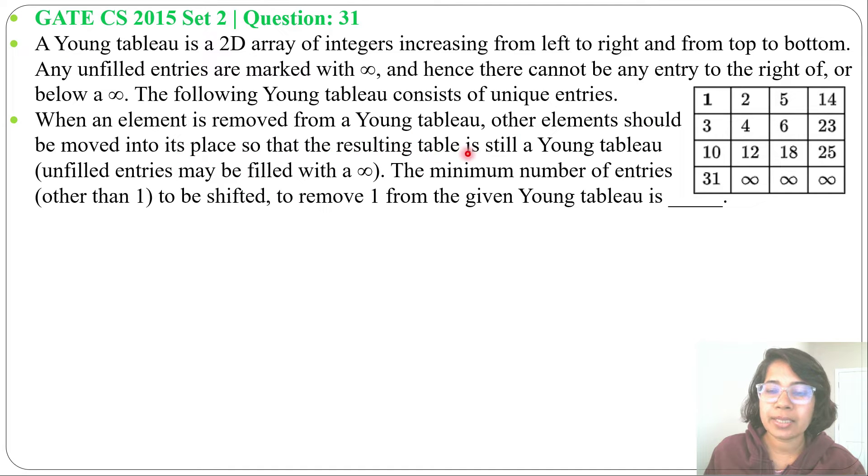So that the resulting table is still a Young tableau, unfilled entries may be filled with infinity. The minimum number of entries other than 1 to be shifted to remove 1 from the given Young tableau is? So it is asking if you are removing 1, then how many shifts will you do to maintain it as a Young tableau?